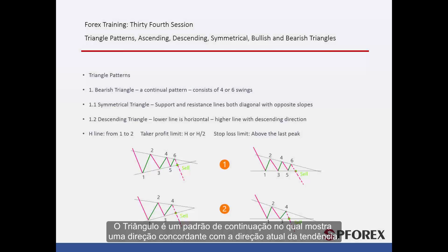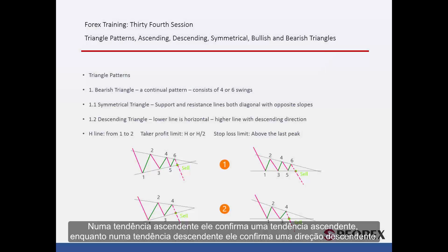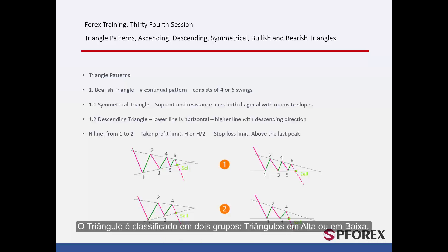A Triangle is a continuation pattern which shows an agreeing direction with the current trend direction. On an upward trend it confirms the current uptrend, while on a downtrend it confirms a downward direction. Triangles are classified into two groups: Bullish and Bearish Triangles.